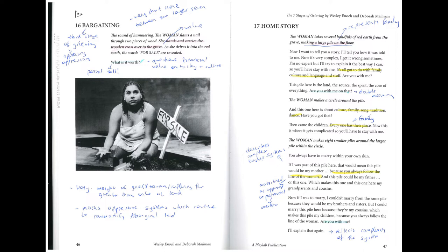Scene 17: Home Story. The woman takes several handfuls of red earth from the grave, making a large pile on the floor. Now I want to tell you a story — I'll tell you how it was told to me. Now it's very complex, I get it wrong sometimes. I'm no expert but I'll try to explain it the best I can, so you'll have to stay with me. It's all got to do with family, culture, language, and stuff. Are you with me? The pile here is the land — the source, the spirit, the core of everything. Are you with me on that?